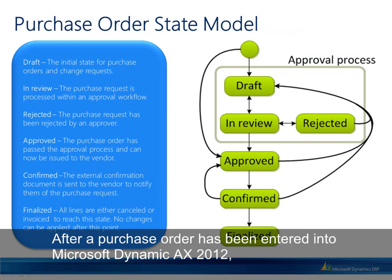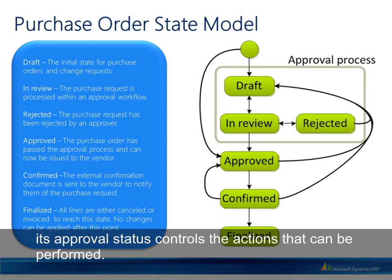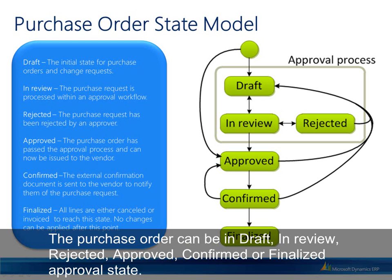After a purchase order has been entered into Microsoft Dynamics AX 2012, its approval status controls the actions that can be performed. The purchase order can be in draft, in review, rejected, approved, confirmed, or finalized approval state.